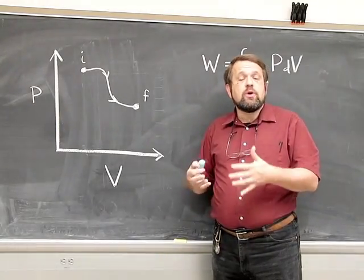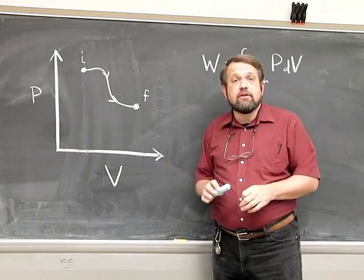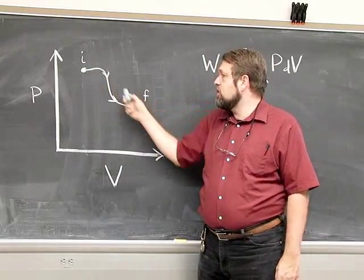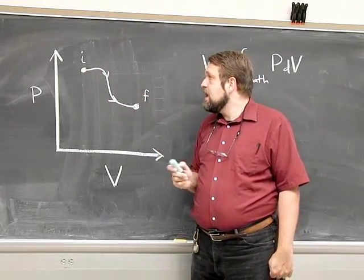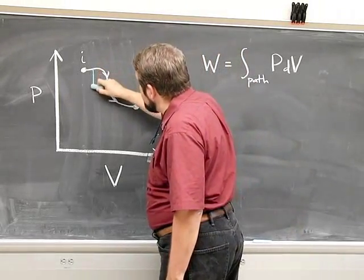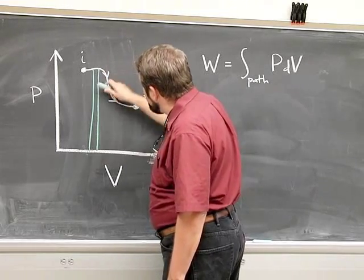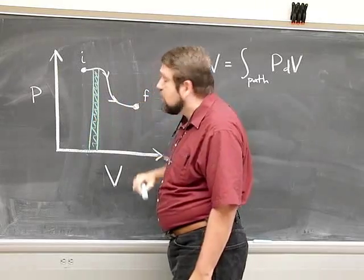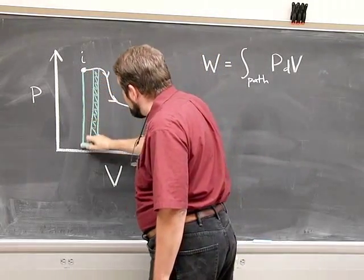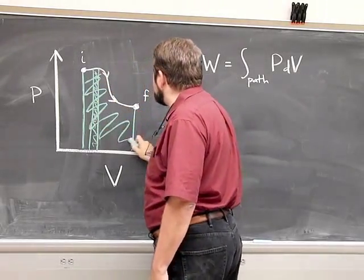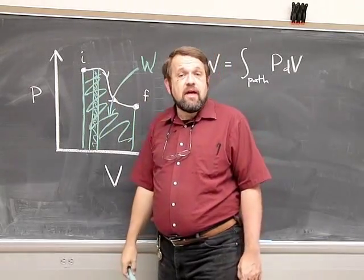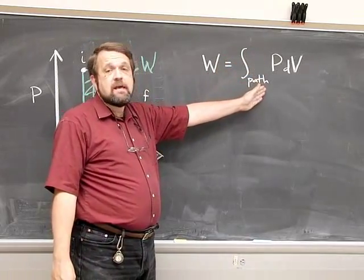Suppose a gas or fluid undergoes expansion. The process of expansion traces out a path in the PV plane from lower to higher volume. For each small change in volume along this path, the work done is the change in volume times the pressure — the area of a small vertical rectangle. When we add up all the work done over all steps, we get the total area under the curve. That total area is the work done in the process, equal to the integral of P dV over that path.